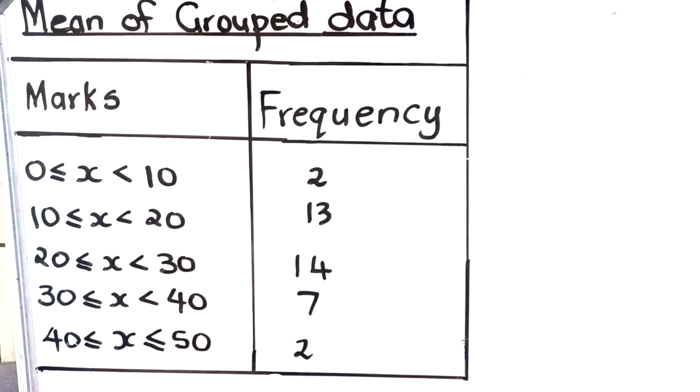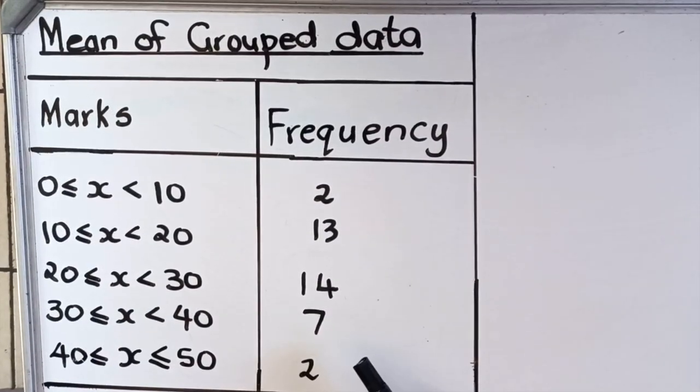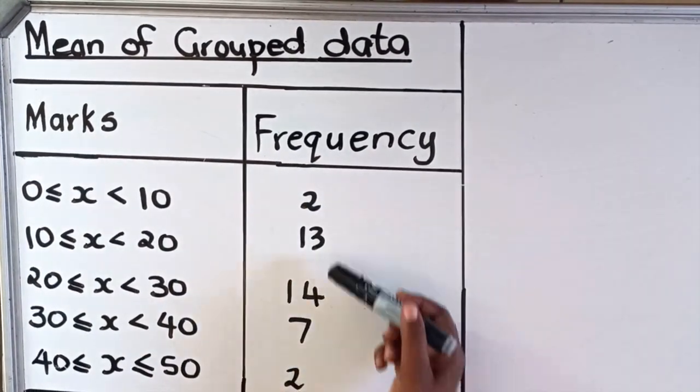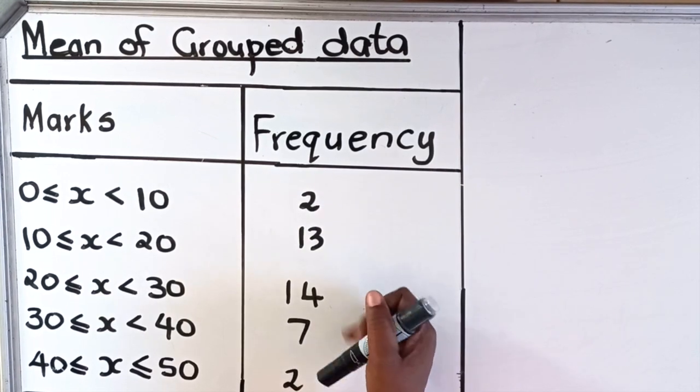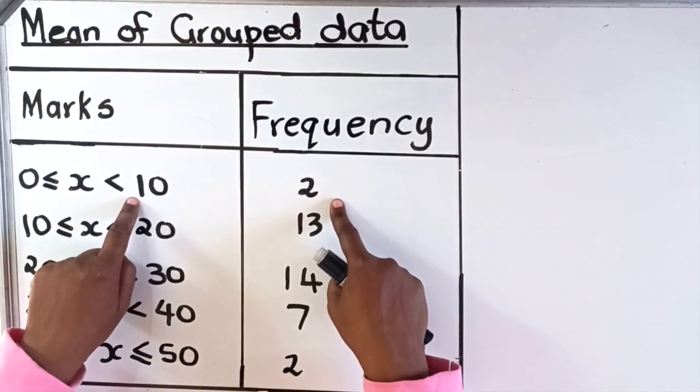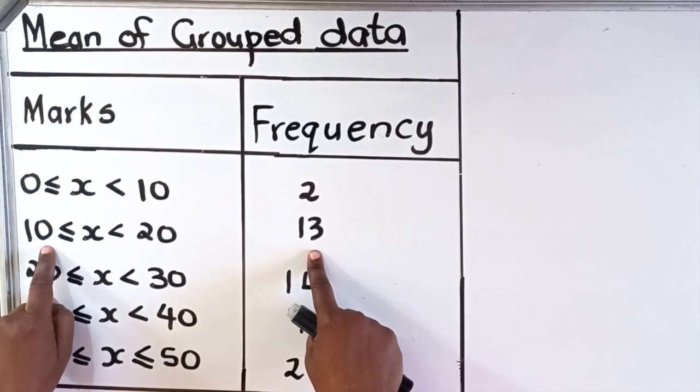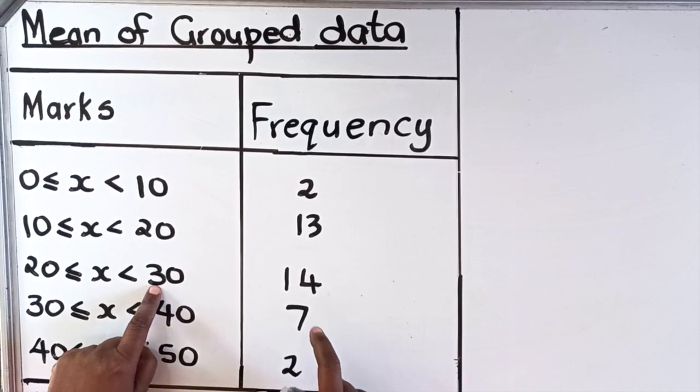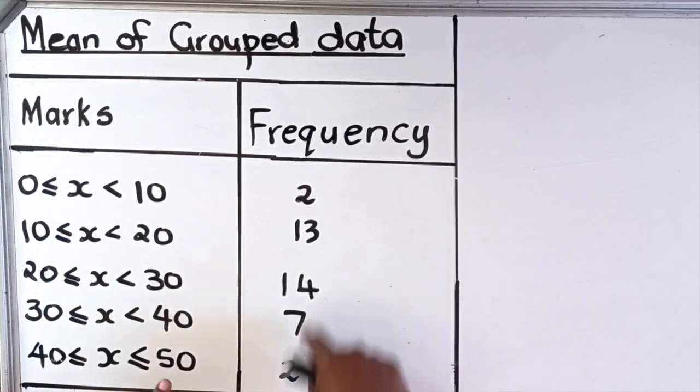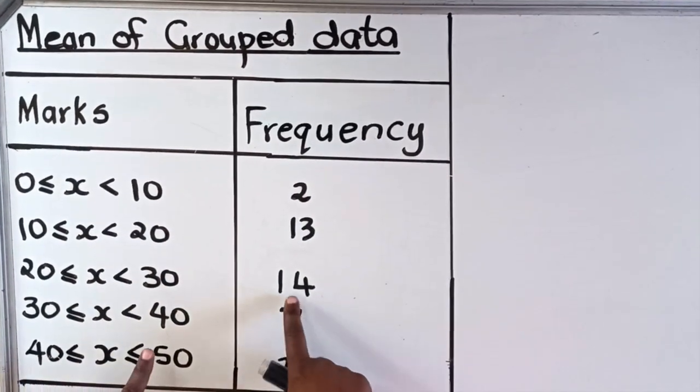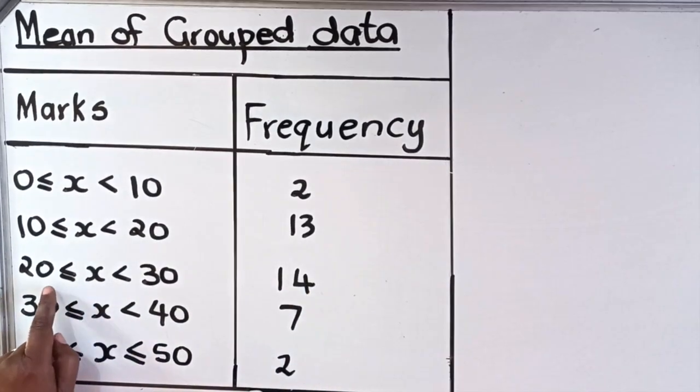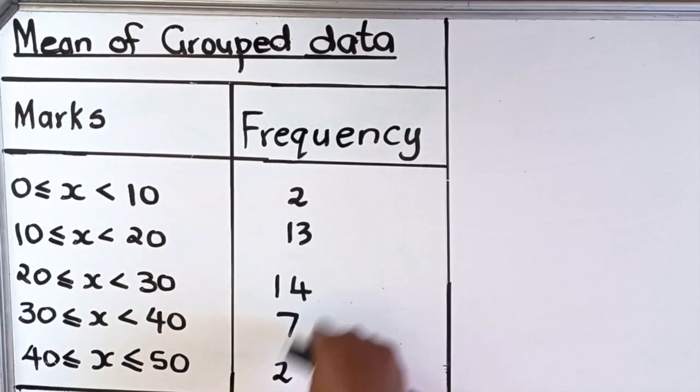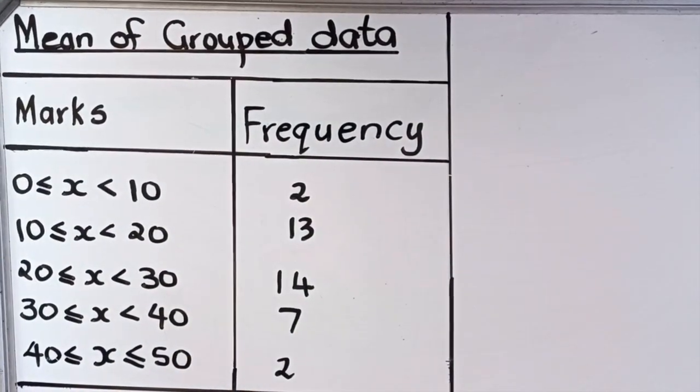Another thing with the mean of grouped data: it will not be the mean of these frequency values. These values are the frequency of learners that got those marks. You don't expect that the mean will be the average of the frequencies, because this is the number of learners that got those marks. I'm expecting that the mean will be higher compared to that, but let's calculate it and then I'll show you what I mean.